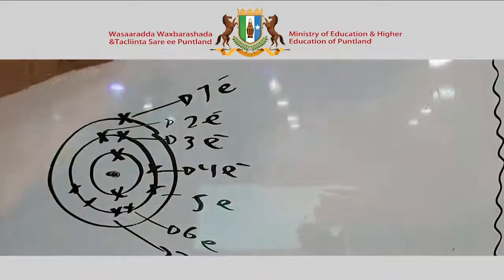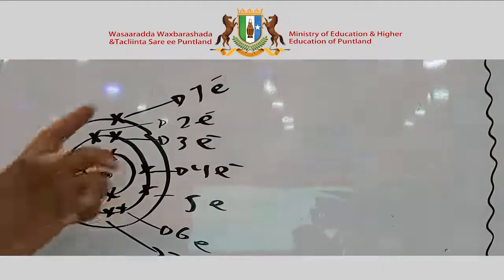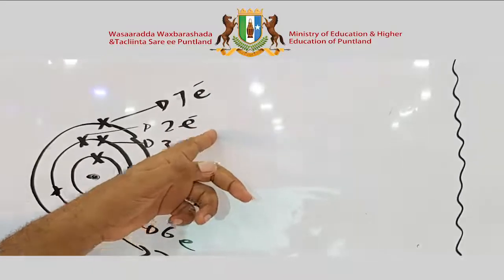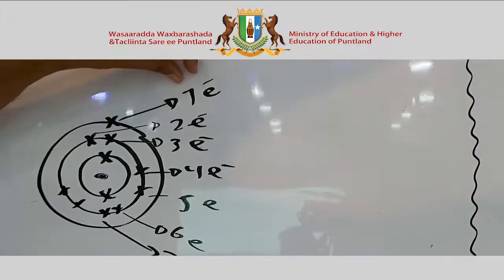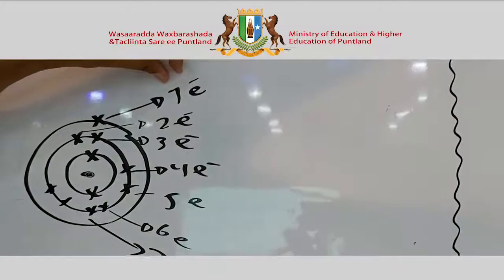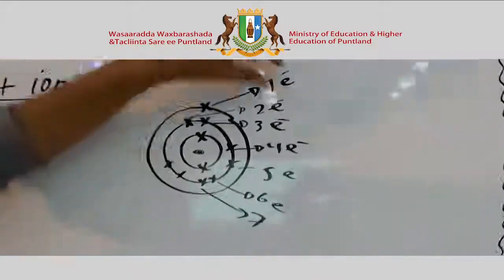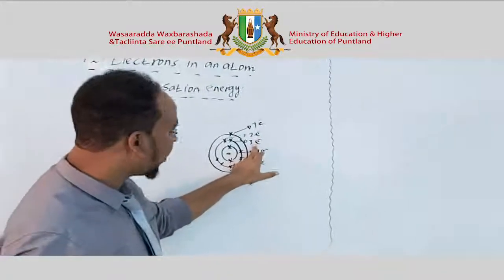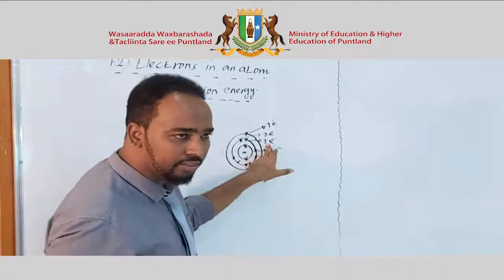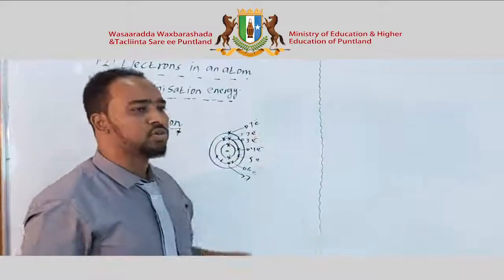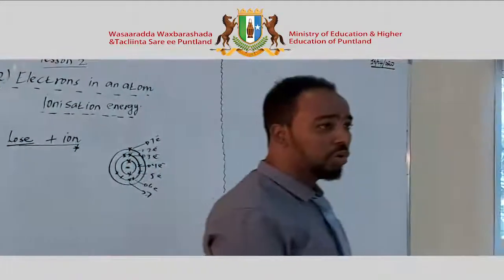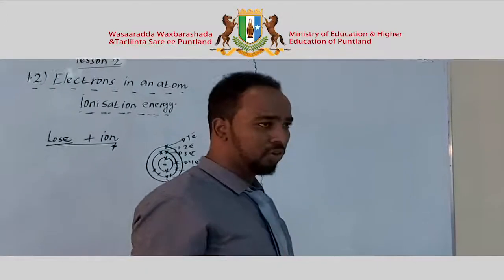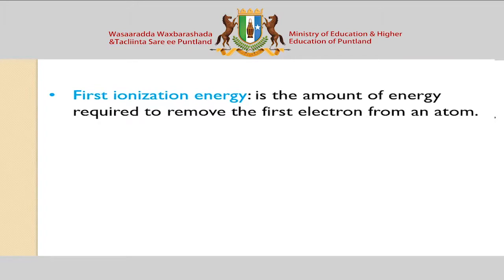If you want to remove the first electron, you use the first ionization energy. If you want to remove the second electron, you use the second ionization energy. If you want to remove the third electron, you use the third ionization energy. Each successive removal corresponds to successive ionization energies.